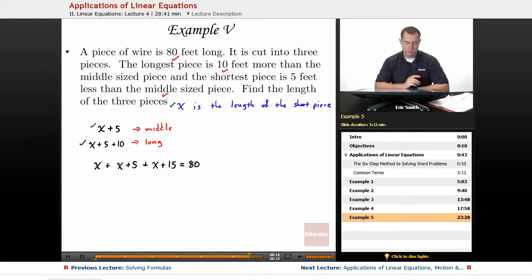Alright, so we got our equation, let's work to solve it. Adding together our like pieces, I have three x's. Then I can put together the 5 and the 15 and get 20. So now I have 3x plus 20 is equal to 80.